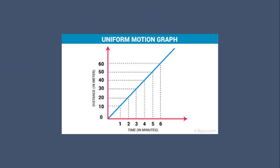Another example: one minute mein ten meter, two minutes mein 20 meter, five minutes mein 50 meter. So uniform motion ka jo graph banega — distance-time graph — woh kaisa banega? Straight line graph.